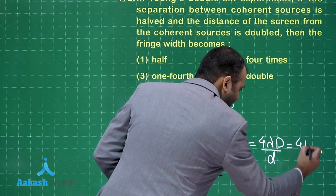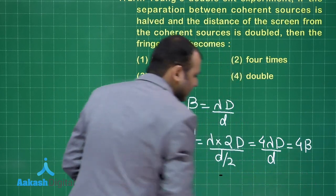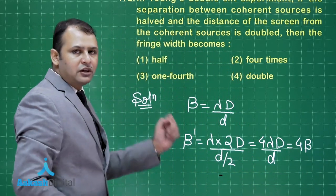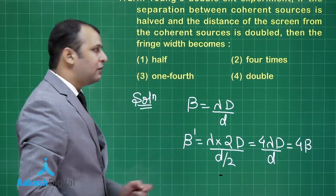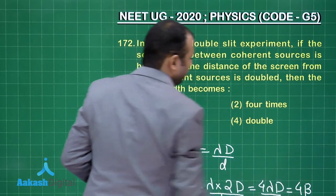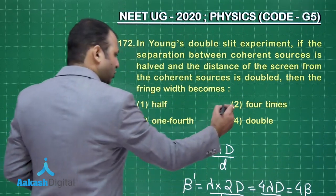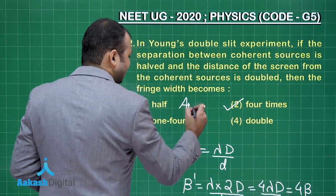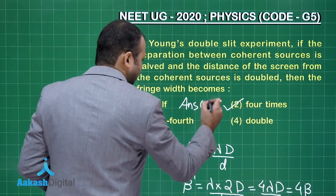That is equals to 4 times of original beta. So as we can see, the fringe width has increased by 4 times. Among the options, option number 2 is the correct answer.